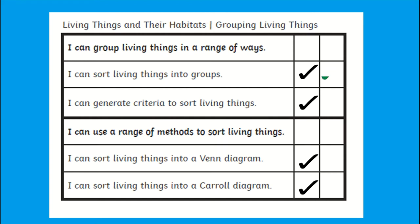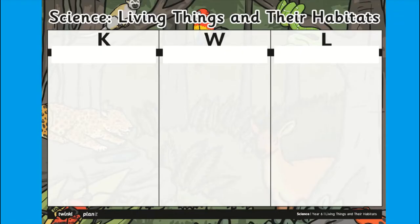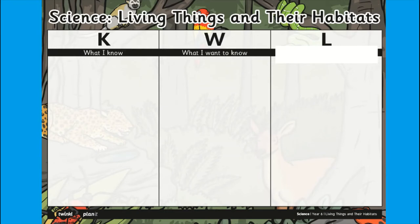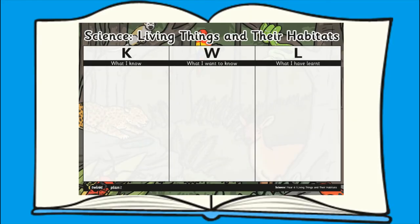This can be used by children to self or peer assess. The second column is provided for an adult to record their assessment on the learning and progress taking place. This KWL grid can be used by your child so they can record what I know, what I want to know, and what I have learned. These KWL grids can be stuck in your child's exercise book at the beginning of the topic and can be used to assess what your child has learned.